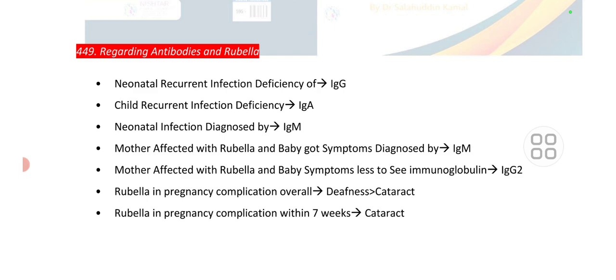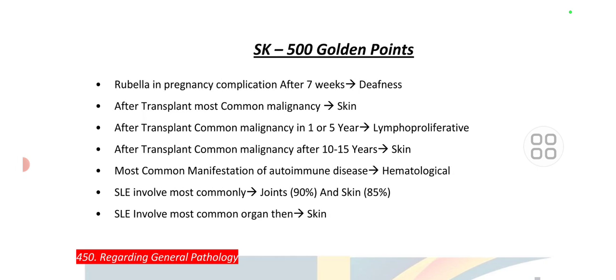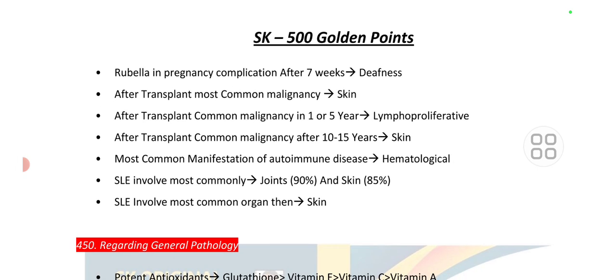When the mother is affected with rubella and baby's symptoms are to be assessed, the immunoglobulin is IgG. The overall complication of rubella in pregnancy is deafness. If deafness is not present in the option, choose cataract. Rubella complication within the first seven weeks is cataract; after the seventh week, it is deafness.